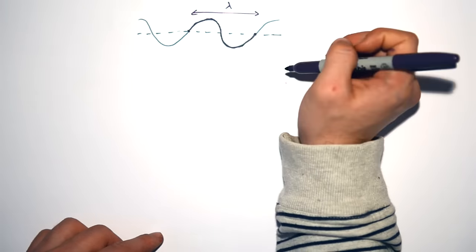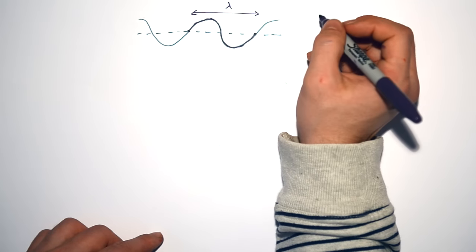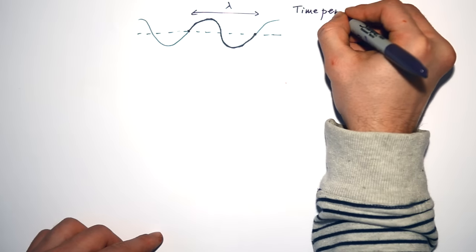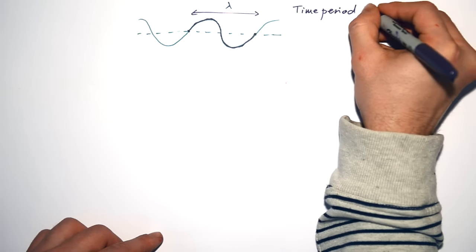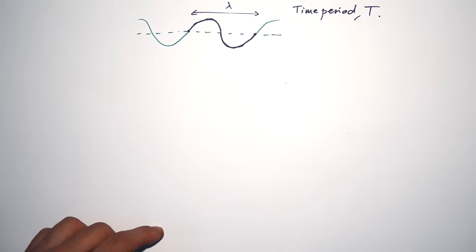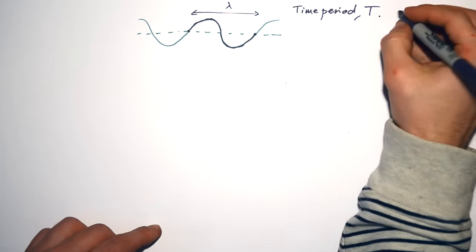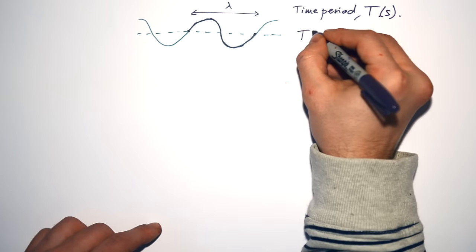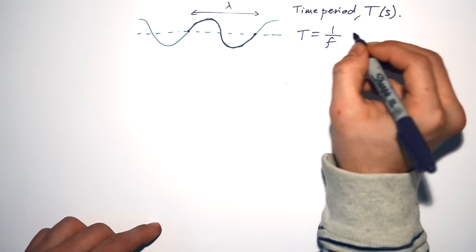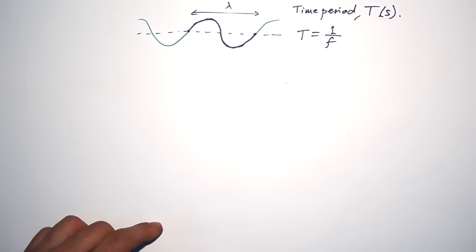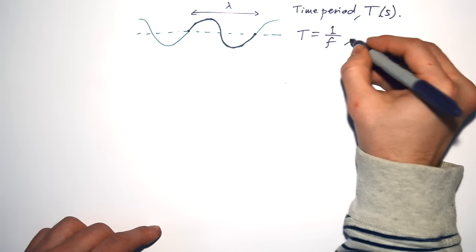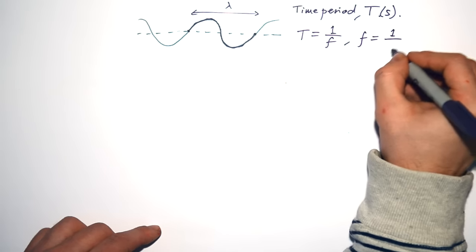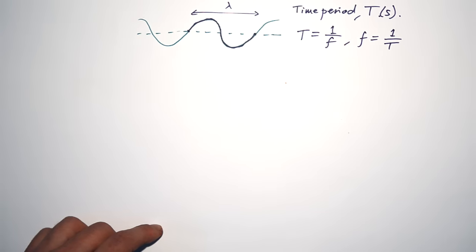The time it takes for this wave to be completed is called a time period. We give that the letter capital T, not little t — capital T — and that's measured in seconds. You can find the time period by taking the reciprocal of the frequency: one divided by the frequency. And that goes the other way around as well — frequency equals one divided by the time period.